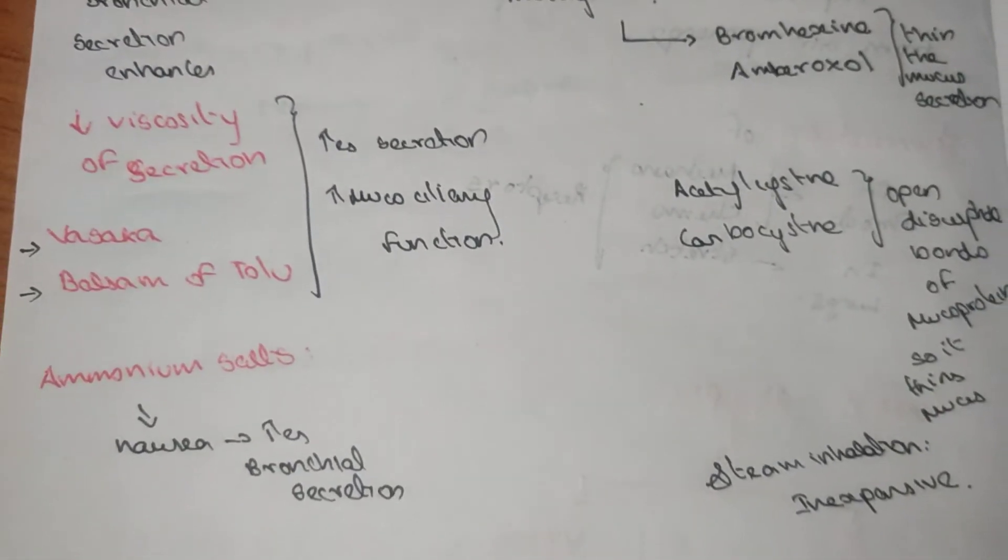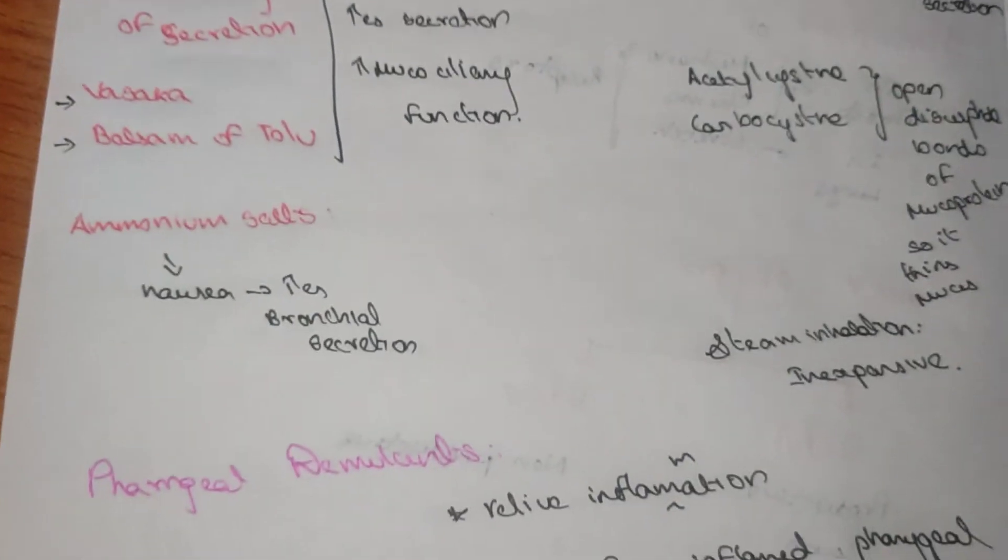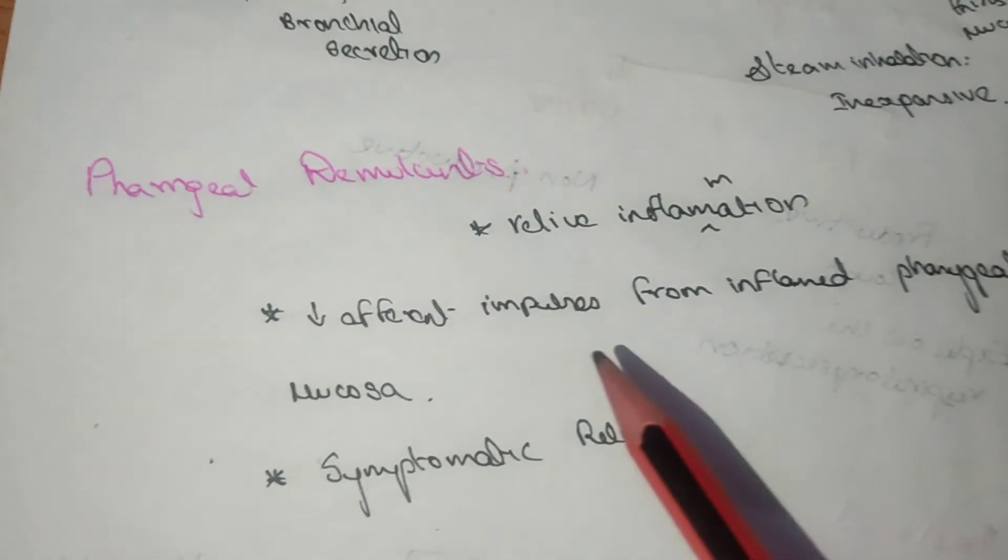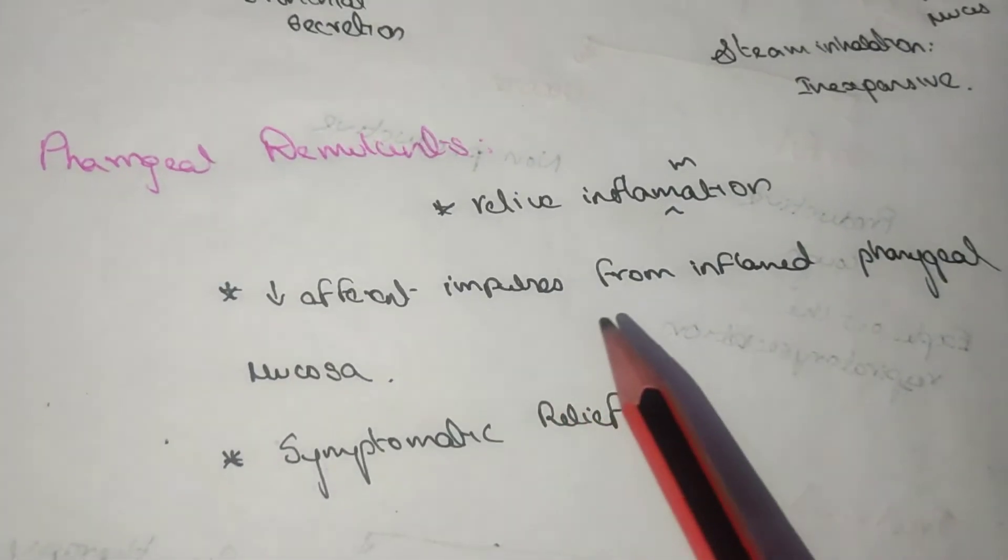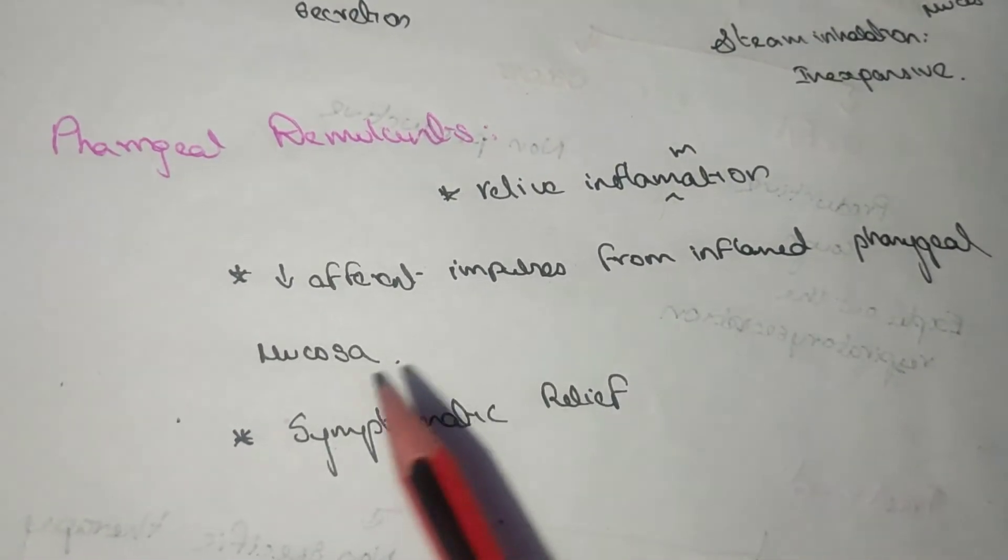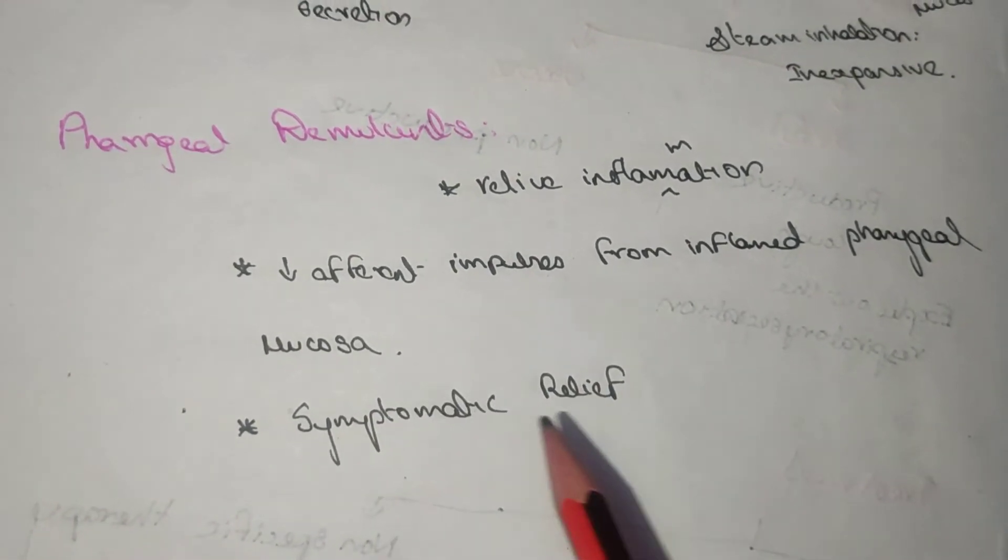The pharyngeal demulcents relieve the inflammation and decrease the afferent impulse from the inflamed pharyngeal mucosa. There is symptomatic relief.